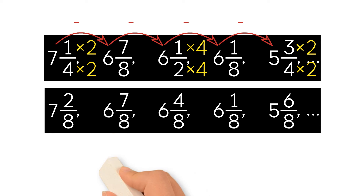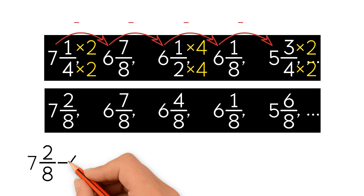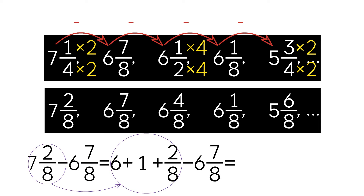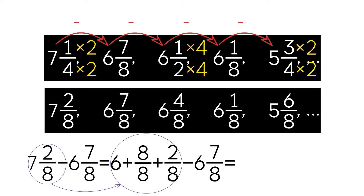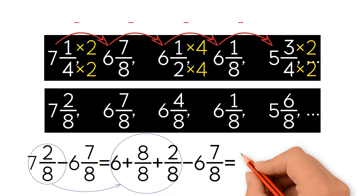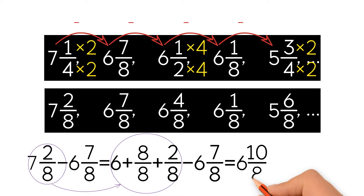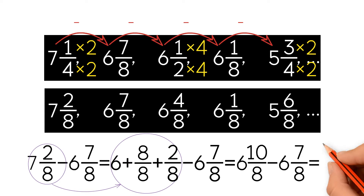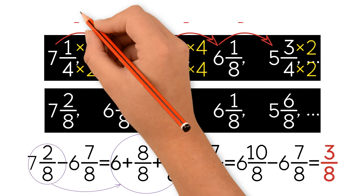Now we can rewrite the original equation to 7 and 2 eighths minus 6 and 7 eighths. We can't subtract 7 eighths from 2 eighths, so we have to regroup. We rewrite 7 as 6 plus 1, and rewrite 1 as 8 over 8. So 7 and 2 eighths becomes 6 and 10 eighths. Now we can subtract and we get 3 eighths. So the rule is to subtract 3 eighths.